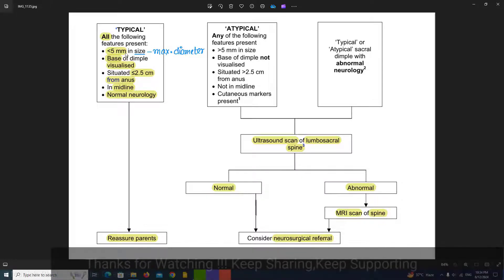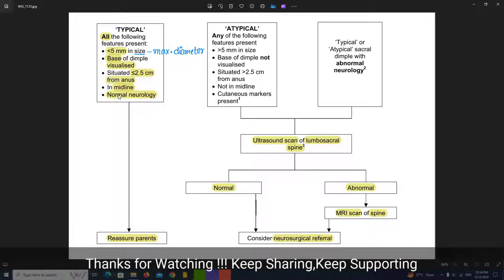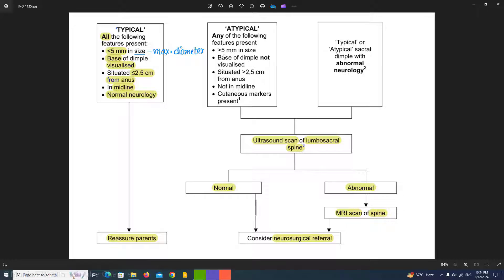If these features are not present, as you can see here, where size of sacral dimple is more than 5 mm, where base of dimple is not visualized, where it is situated more than 2.5 cm from anus, where it is not in midline, and where other cutaneous markers present, then we will label it as atypical.